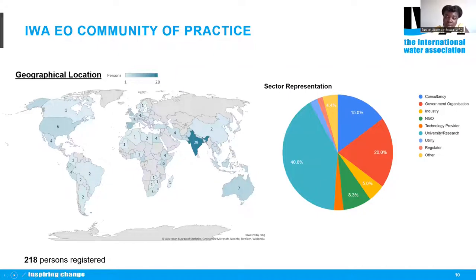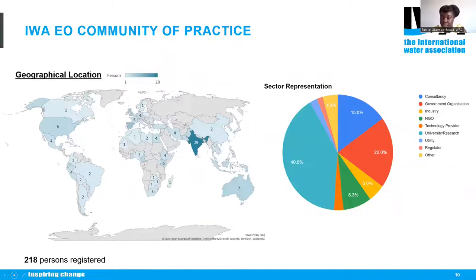In terms of geographical representation, there is quite a bit of coverage globally, within the African continent, South America, North America, the Asian sub-region, and Australia as well. For sector representation, the dominant group is based in universities or research, followed by consultancies and government organizations, which is quite reflective of the poll taken earlier in this webinar.